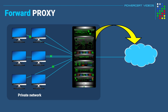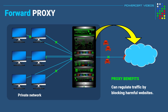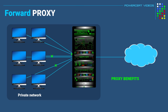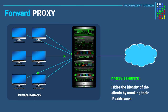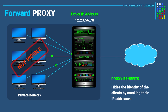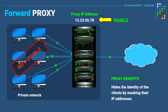By doing this, it creates a safety barrier between a private network and the internet, because a major benefit of a proxy is that it can regulate traffic by blocking harmful websites. Another benefit is that it hides the identity of clients by masking their IP addresses and using its own IP address, so those websites and servers only see the IP address of the proxy server and not the clients.